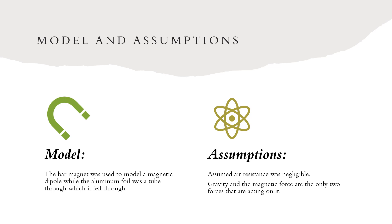For a model, the bar magnet was used to model a magnetic dipole while the aluminum foil was the tube through which it fell through. We assumed air resistance was negligible, and gravity and the magnetic force are the only two forces acting on the bar magnet.